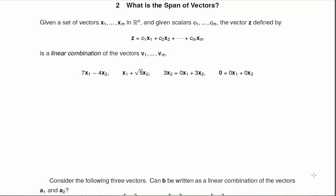So now we'll discuss the span of a set of vectors. First, if we have some vectors x1 through xm in Rn, and we have some scalars c1 through cm, the vector z given by c1x1 plus c2x2 all the way up to cmxm is called a linear combination. So basically, it's just some scalar multiplication and addition.